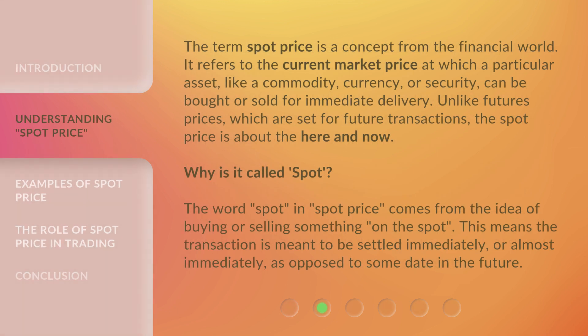The term spot price is a concept from the financial world. It refers to the current market price at which a particular asset, like a commodity, currency, or security, can be bought or sold for immediate delivery. Unlike futures prices, which are set for future transactions, the spot price is about the here and now.